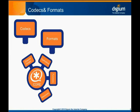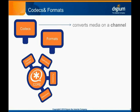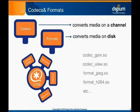Digital media carried by Asterisk must be formatted in a specific, predefined way. An audio or video codec defines a standardized representation format and converts between that format and a native internal format. Within Asterisk, these conversions are carried out by codec modules when converting media on a channel, and format modules when converting media saved on the file system. Through these modules, Asterisk supports over a dozen audio codecs and several common video codecs.